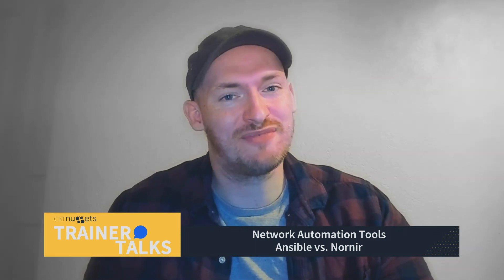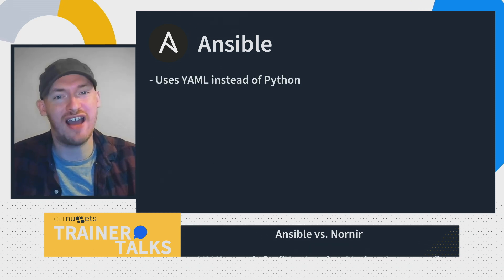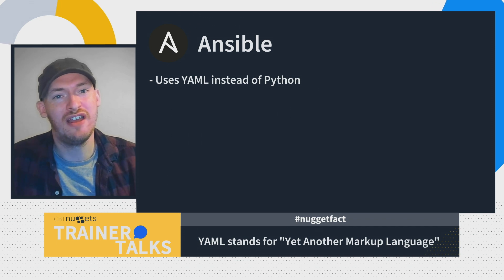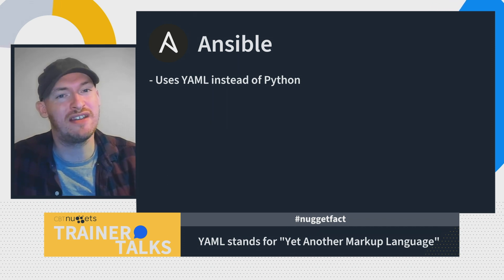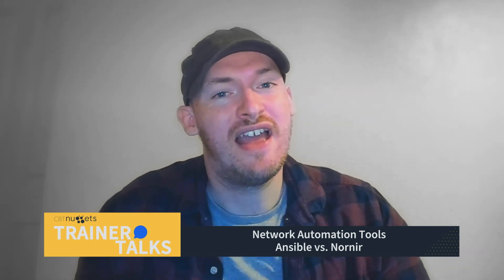First, let's look at Ansible. The first big benefit is that Ansible uses YAML, which is very human readable. Most people, even with little to no coding experience, can eyeball an Ansible playbook and get a good sense of what it's trying to do. So if you're new to network automation, or you lead a team of network engineers without much programming experience, Ansible's simple and readable solutions could be a very good starting point.